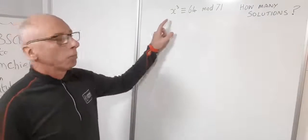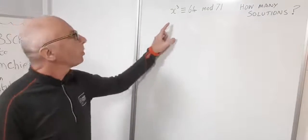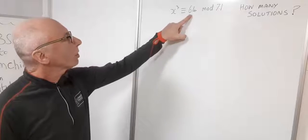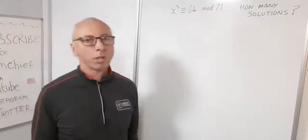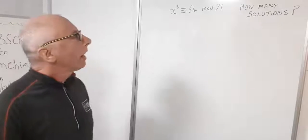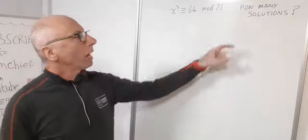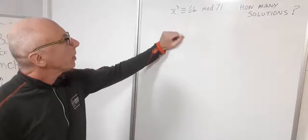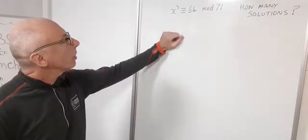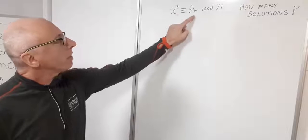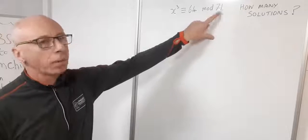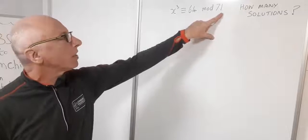We have a question here: we want to find solutions to x cubed congruent to 64 modulus 71, and we want to know how many solutions there are. We're looking at potentially numbers between 0 and 70.